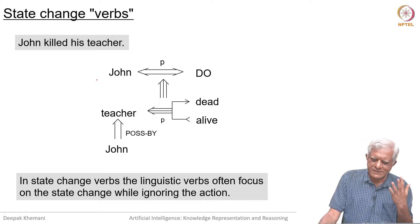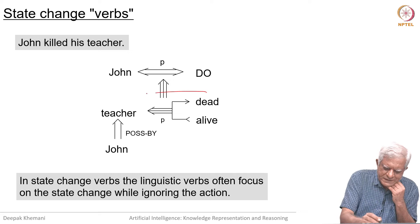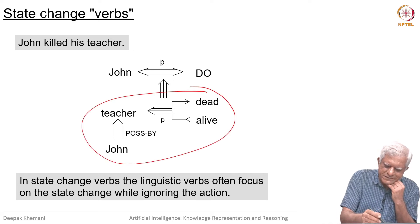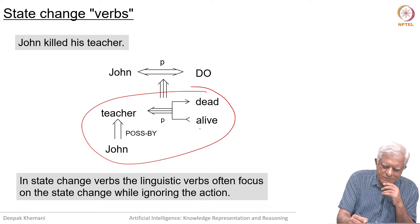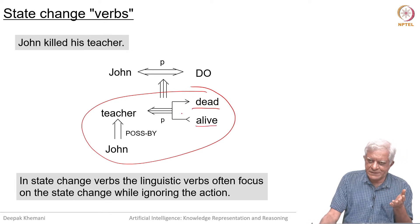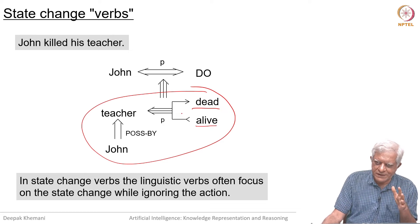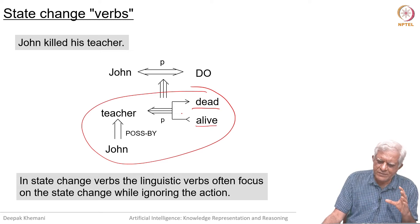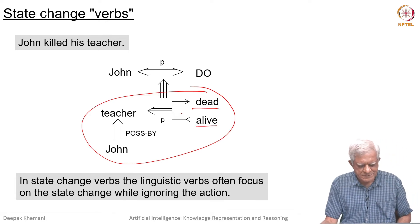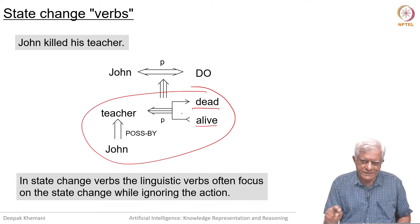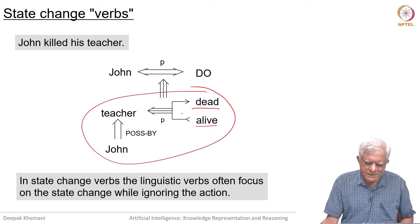These are called state change verbs. The main thing happening is that the teacher — modeled as possessed by John in the past tense — went from the state of being alive to the state of being dead, and this happened because John did something. This is an accurate representation of 'John killed his teacher' because we do not know what he did. Linguistic verbs often focus on the state change while ignoring the action part. Conceptually, 'killed' is not an action.